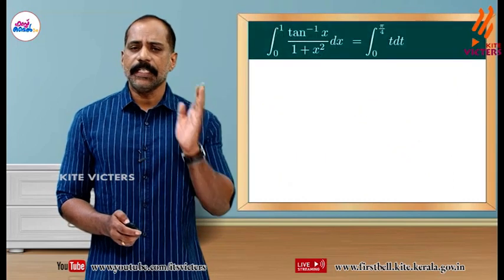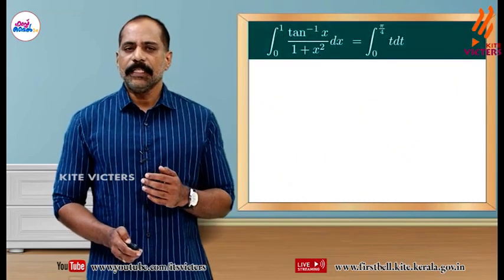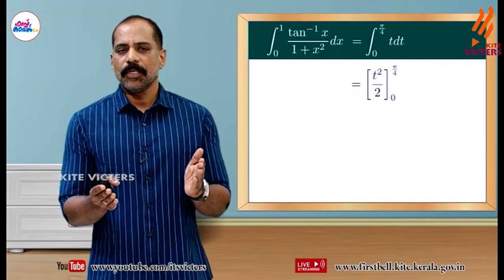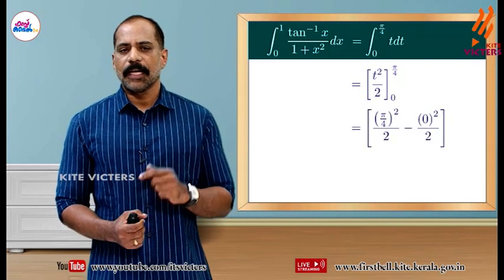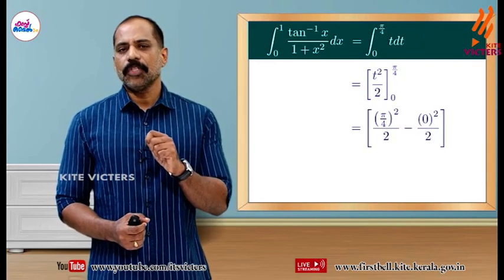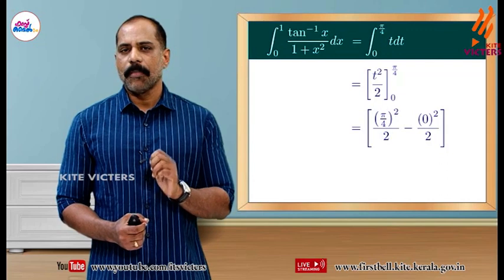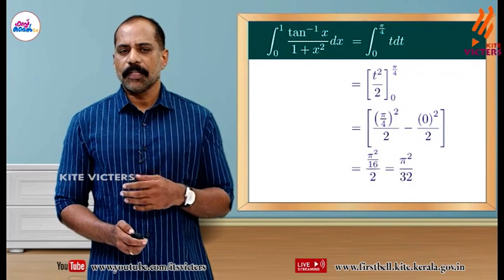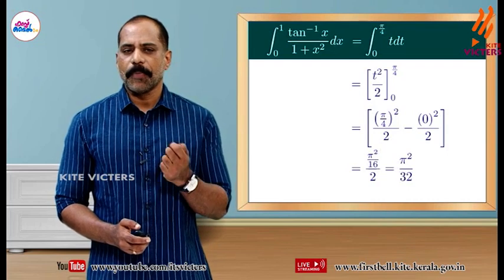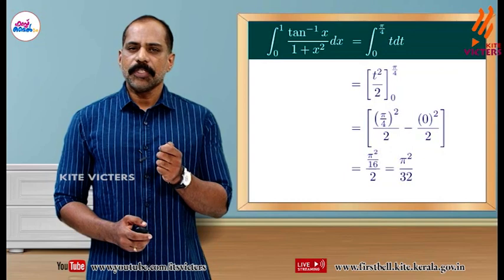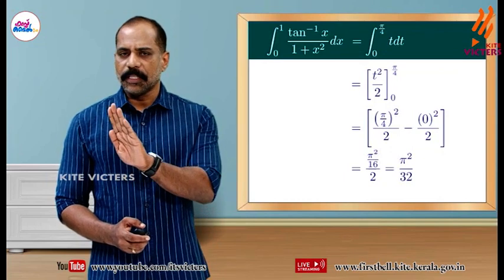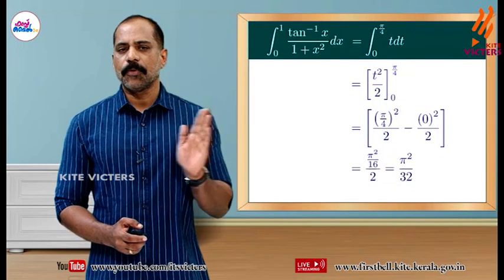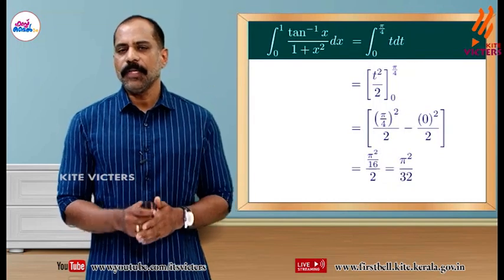Integrating t gives t squared by 2. Applying the limits: the upper limit pi by 4 gives pi squared by 16 divided by 2, minus 0 squared by 2, which equals pi squared by 32.